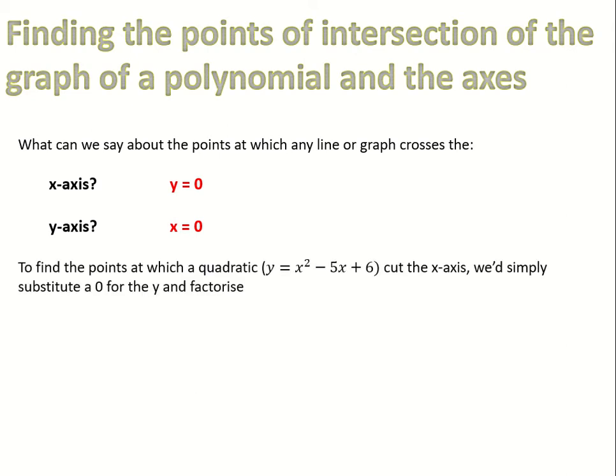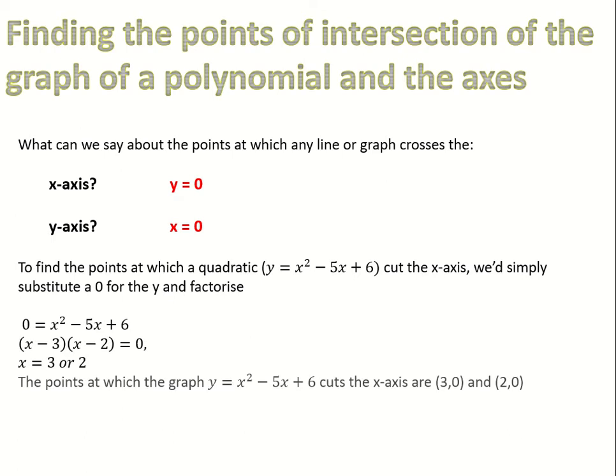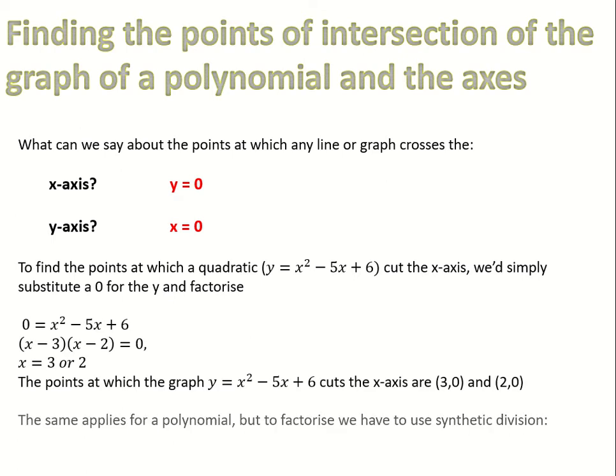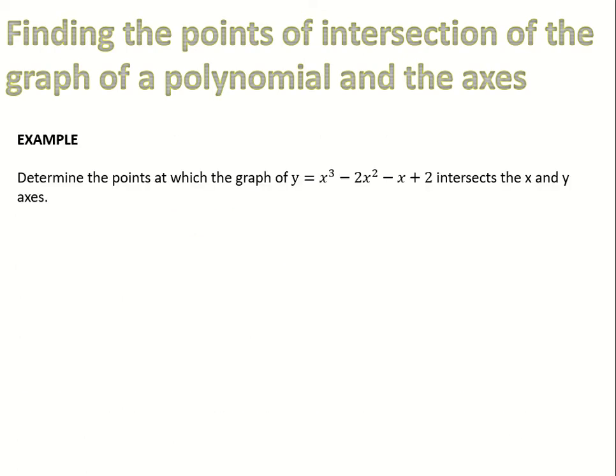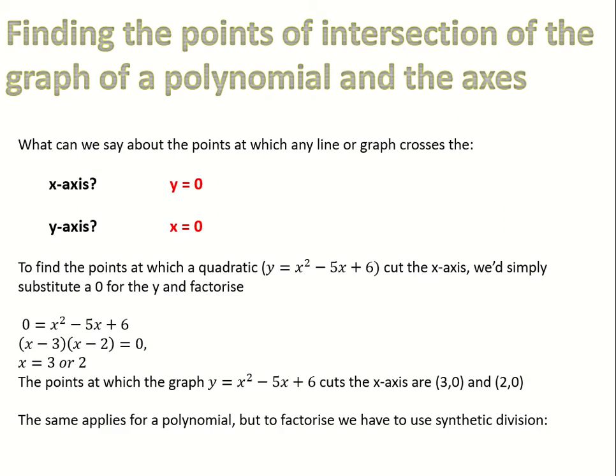To find the points at which a quadratic — for example, y equals x squared minus 5x plus 6 — cuts the x-axis, we substitute 0 in for y and then factorize. We get x equals 3 or 2. The same applies for a polynomial of a higher degree, so all we want to do is factorize in the way we've been doing and then set it all equal to 0.